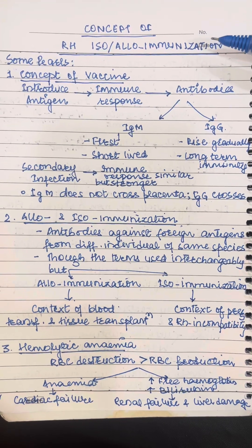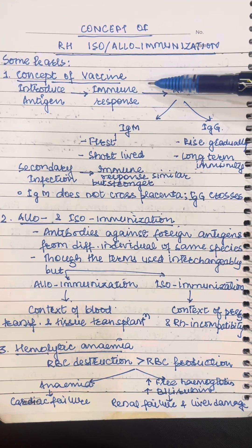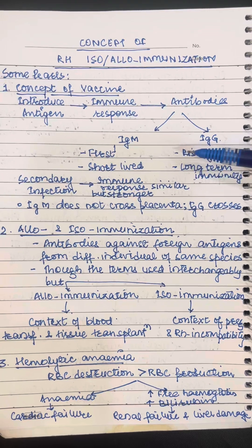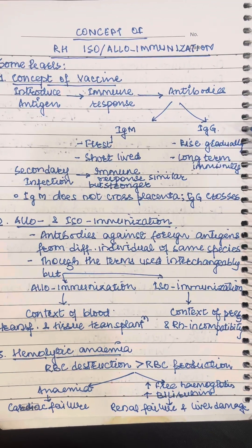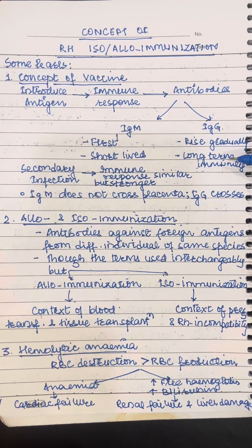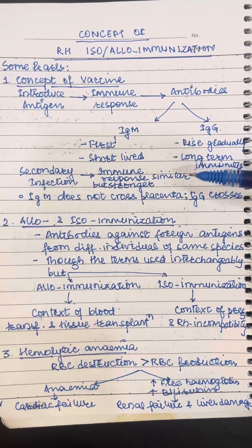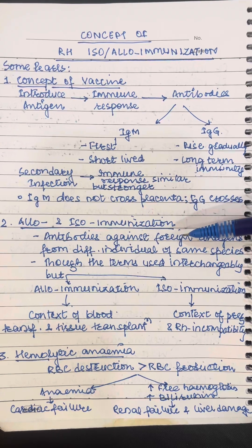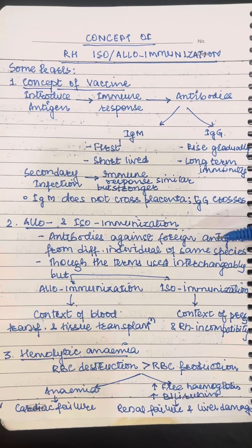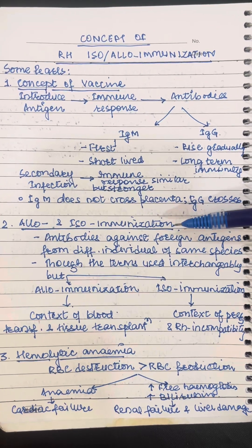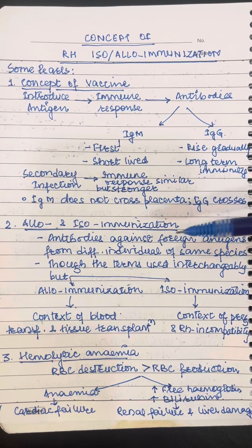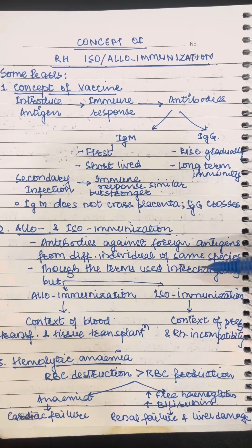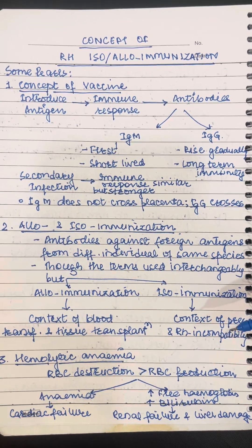What is the concept of vaccine? You introduce an antigen, it incites an immune response and development of antibodies which are IgM or IgG type. IgM antibodies are formed first and they are short lived, whereas IgG are rising gradually but they cause long term immunity. In vaccines the antigen is from a different species, but if antibodies develop against foreign antigens from a different individual but of the same species, then we call it allo or isoimmunization. Allo is usually used in context of blood transfusions and tissue transplantation, while iso is usually used in context of pregnancy and RH incompatibility.